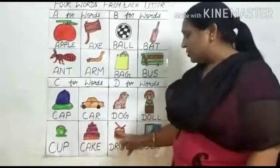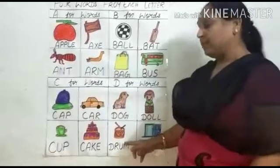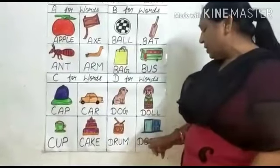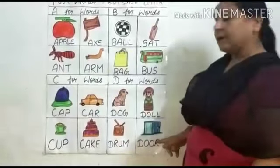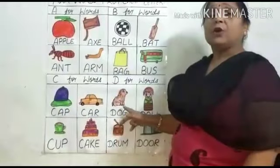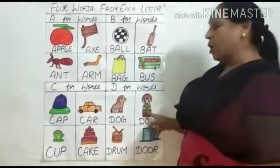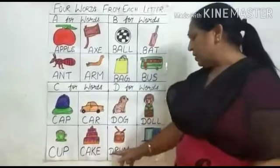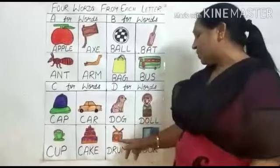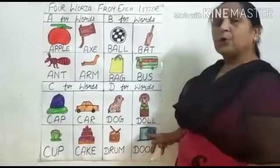What is this? This is a drum. D-R-U-M. Drum. Drum means drum. What is this? This is a door. D-O-O-R. Door. Door means darwaja. D-O-G. Dog. Dog means kuttam. D-O-L-L. Doll. Doll means budiya. D-R-U-M. Drum. Drum means drum. D-O-O-R. Door. Door means darwaja.